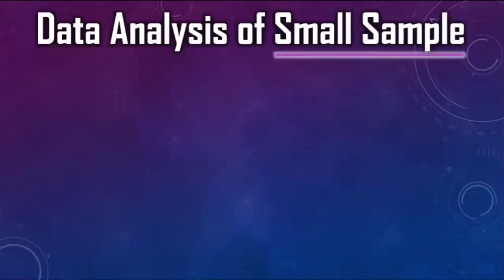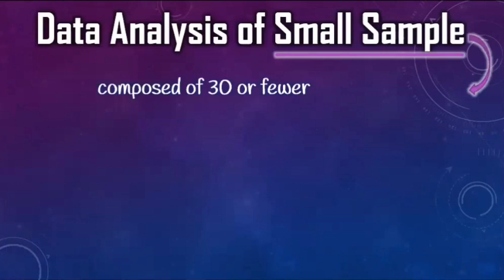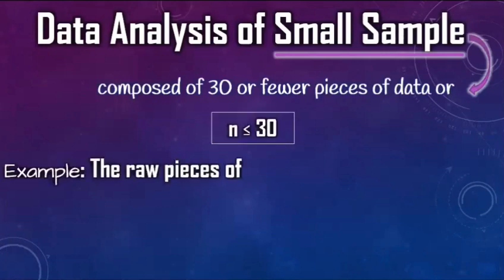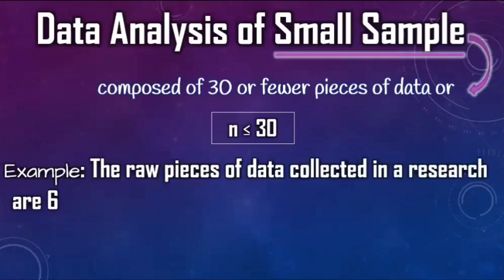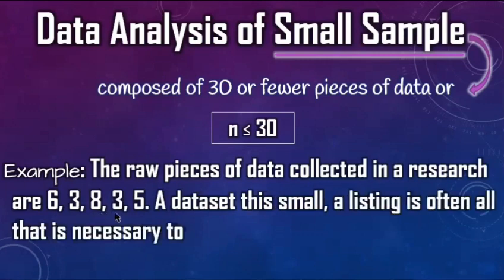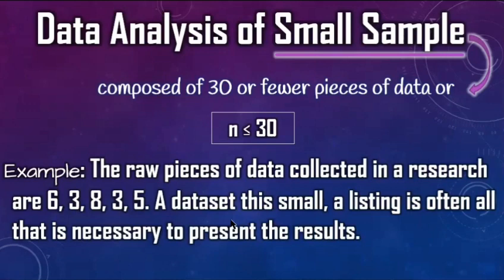The small sample is composed of 30 or fewer pieces of data. For example, the raw pieces of data collected in our research are 6, 3, 8, 3, and 5. This data set is small, so a listing is often all that is necessary to present the results.